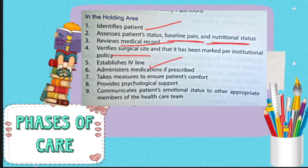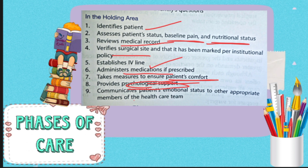Our duty is to establish a quality IV line because in the operation theater there will be a lot of fluid requirements — we need to insert fluids through the IV cannula. Even before entering the operation theater, medications and fluids need to be given to the patient in the preoperative time, so a quality IV cannula is essential. We should provide psychological support and make the patient comfortable, as patients going to the operation theater will be in a frightened mood. Finally, we need to share the patient's condition with co-workers so that quality of care is maintained.